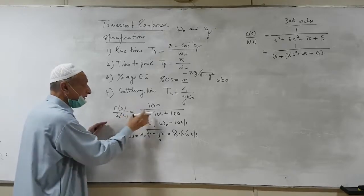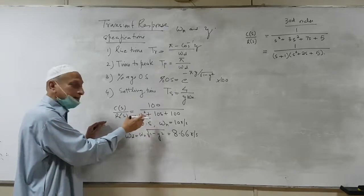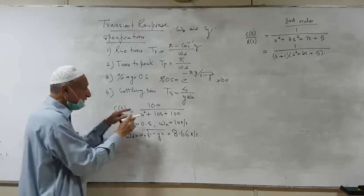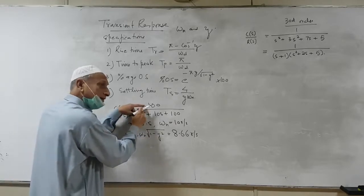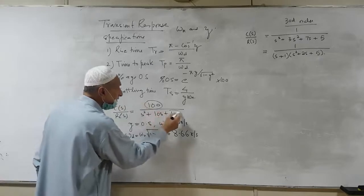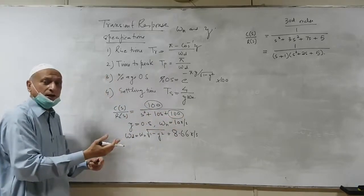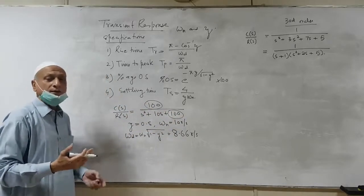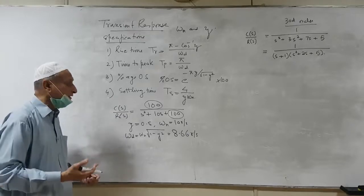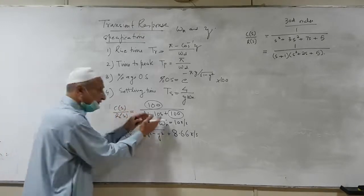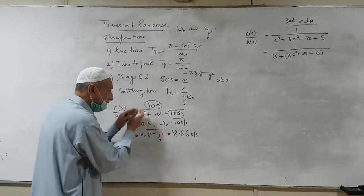This is a second-order standard transfer function. Remember one thing: in the standard transfer function of a second-order system, this quantity and this quantity must be the same. Otherwise it's not a standard second-order expression. The closed-loop transfer function is given in this form.